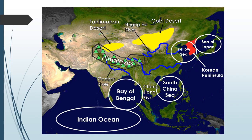Lastly is the Himalayas. It passes through India, Pakistan, Afghanistan, China, Bhutan, and Nepal. It separates India from the Tibetan Plateau. The tallest mountain in the world, Everest, is located in this mountain range.